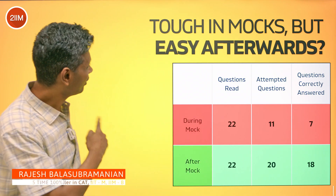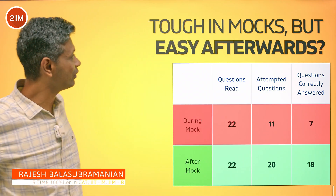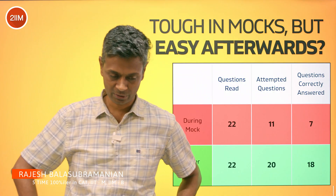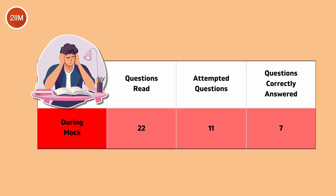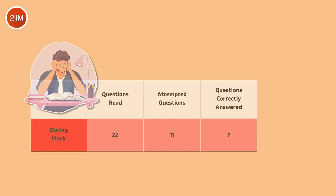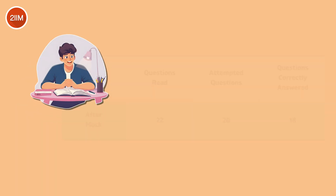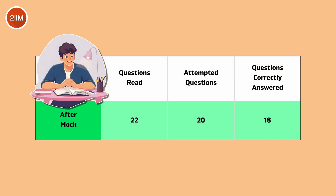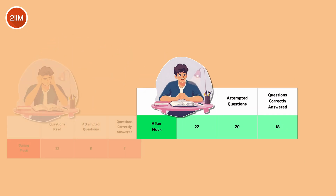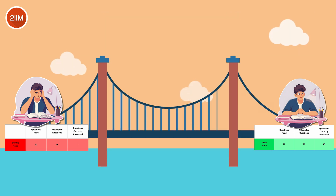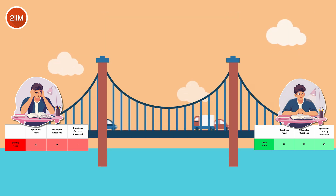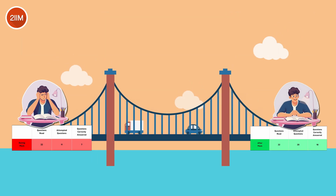Hello folks, we all feel this — tough in mocks but easy afterwards. I'm able to attempt only this many, I answer correctly only this many, but afterwards I'm able to do it really quickly. Questions look super juicy. How do I bridge this gap? First of all, this gap is not huge.